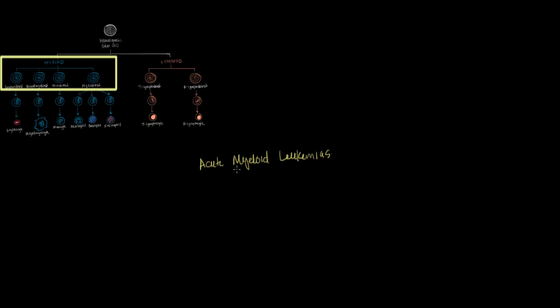And because there are many types of myeloid cells, you can have several different types of acute myeloid leukemias. And acute myeloid leukemia is abbreviated AML. So for example, you could have an acute myeloid leukemia developing from a myeloblast. So this cell over here. And that would give you, and that would be called an acute myeloid leukemia.